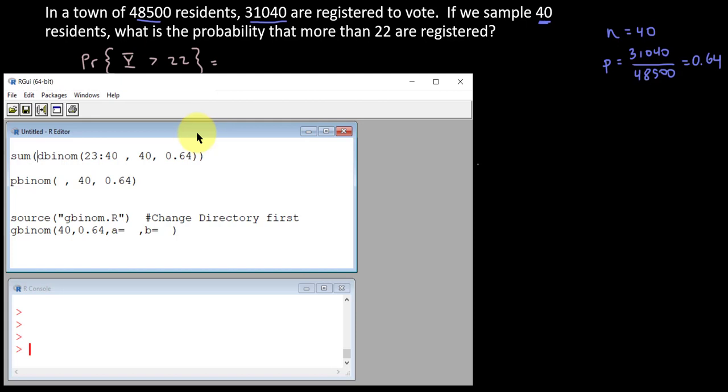If you prefer pbinom, this might be less typing, but pbinom gives us the cumulative probability. So if I typed in 22 as my input here, this would give me the probabilities I actually don't want. I want more than 22, not 22 or less. So this gives me the exact opposite, or the complement, of what I would want. So I would need to do 1 minus that input for pbinom.